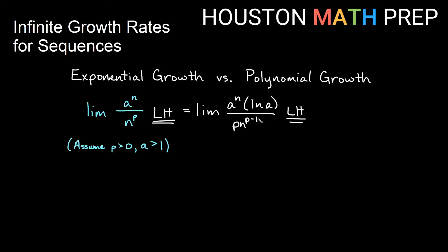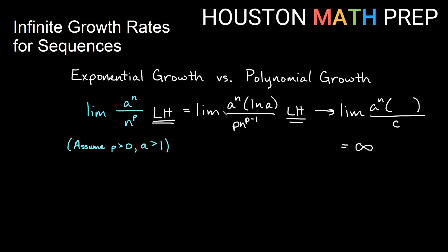As I continue taking derivatives, the exponent on n keeps decreasing — to p−2, then p−3 — so the denominator eventually approaches a constant. That means we end up with the limit of a^n times some constant over something that approaches a constant. Infinite growth over a constant tends toward infinity. So this is saying that exponential growth is much faster than polynomial growth.